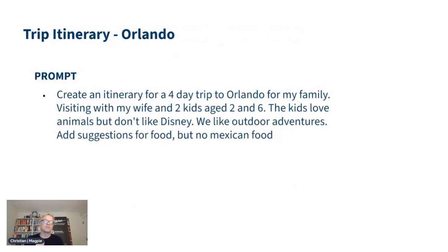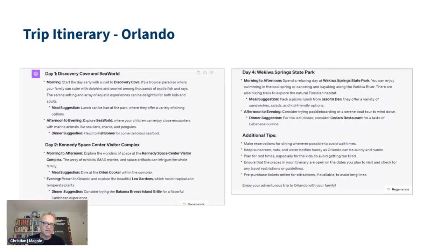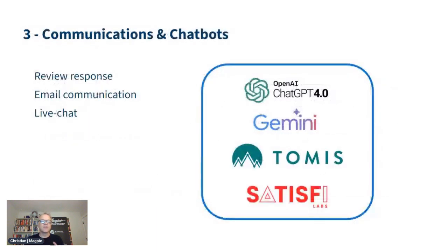Last one I'll go through: trip itinerary. I do these all the time in demos. You can create a really personalized itinerary for a group coming in. I created a four-day Orlando trip: kids love animals, hate Disney, like outdoors, no Mexican food. It came up with an exact itinerary addressing all those personalized requests — it does a really good job of this.